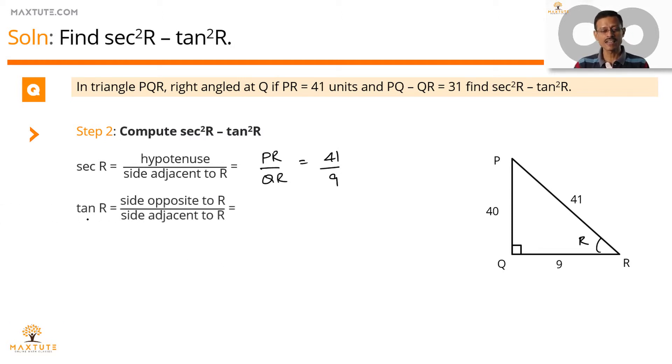The second trigonometric ratio, tan R. Tan R is opposite side by adjacent side. Side opposite to angle R, which is equal to PQ. Side adjacent to angle R, which is equal to QR. So PQ by QR will be equal to 40 by 9.